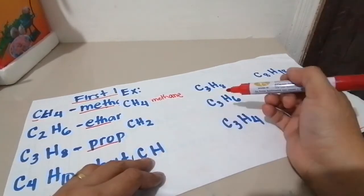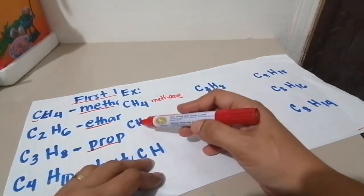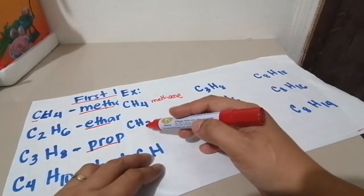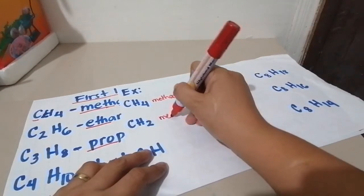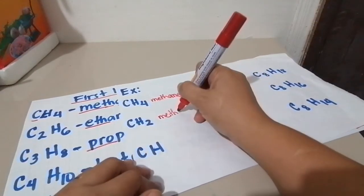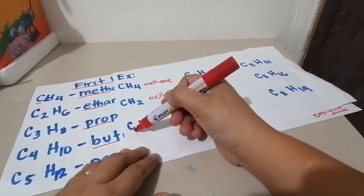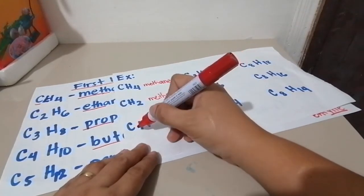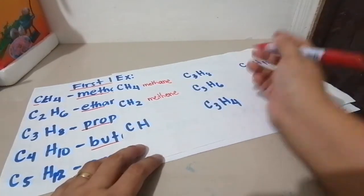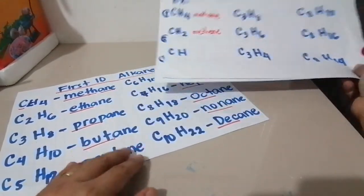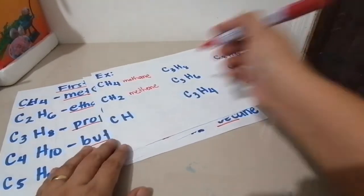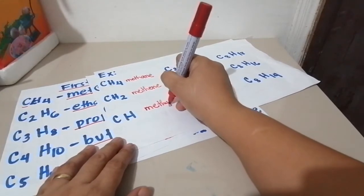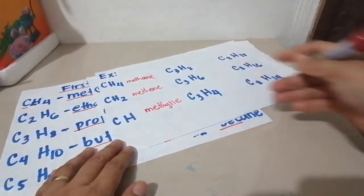This one, 2 times 1 is 2. This is alkene. So this is methene. Next is here, one again. And there's only one hydrogen here. So 2 times 1 is, this is methyne.